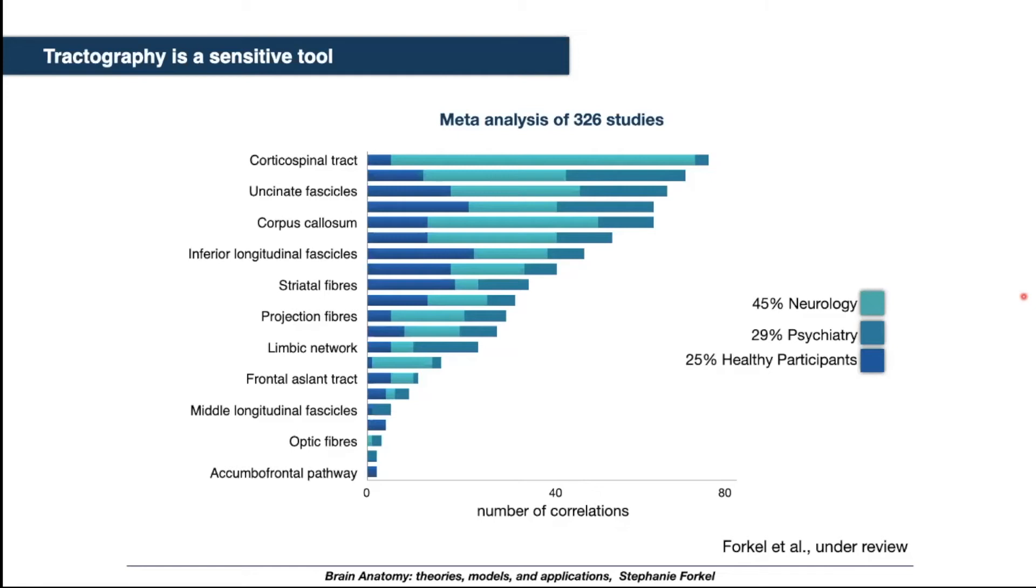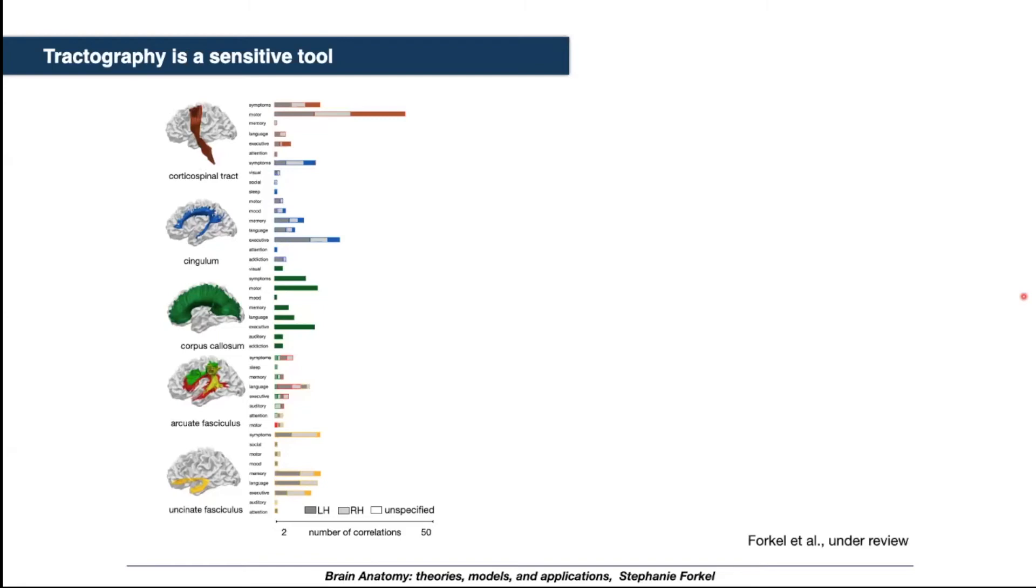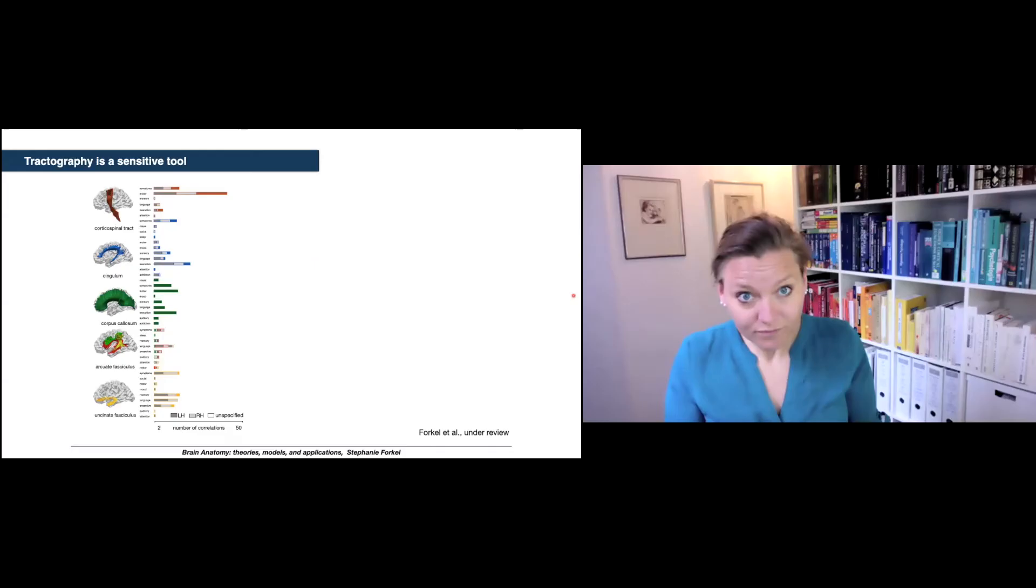The second point I want you to take away is that not all tracts are studied equally in the literature. We can see that the top dog in the field is the corticospinal tract followed by the arcuate fasciculus, the corpus callosum, and so on. But when we come to the end of the scale, you see, for example, a frontal pathway that is hardly being studied in the literature. Now there's two possible main reasons why that could be. Number one is that the anatomy is less well defined and people are less aware of it. The other possibility is that with current methods some of these tracts might just be difficult to dissect in the living human brain.